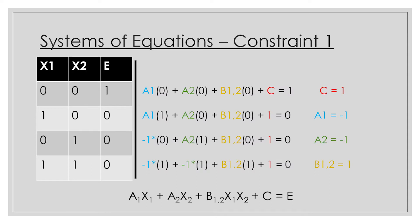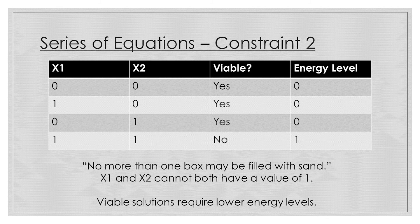So we use our system of equations to find out that our constant c is 1, a1 is negative 1, a2 is negative 1, and finally b12 is 1. So that's wonderful — we have one of the two QUBO equations down.